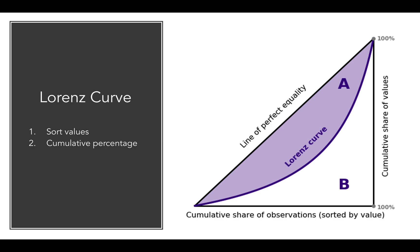As a hypothetical example, if we're studying wealth and we found that the poorest 30% of our population contains 10% of our wealth, that Lorenz Curve should pass through the point 0.3 and 0.1. One other thing to notice about this curve is the line of perfect equality. Basically, if all of our data points are exactly the same — if everybody has $100 — we would be traveling along that line of perfect equality for the entire data set.